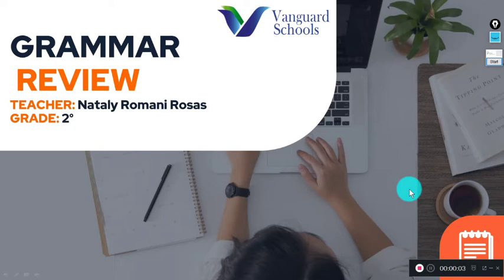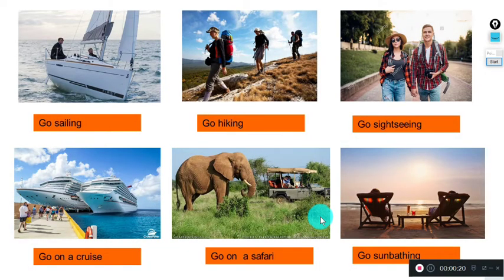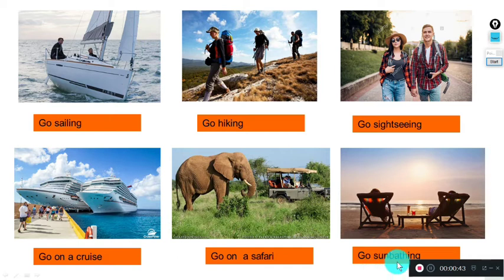Hi students, good morning! Welcome to another English class. Today we're going to focus on making a grammar review — checking what we have been doing during these weeks. First, let's check vocabulary related with activities. We have: go sailing, go hiking, go on a cruise, go on a safari, and go sunbathing.